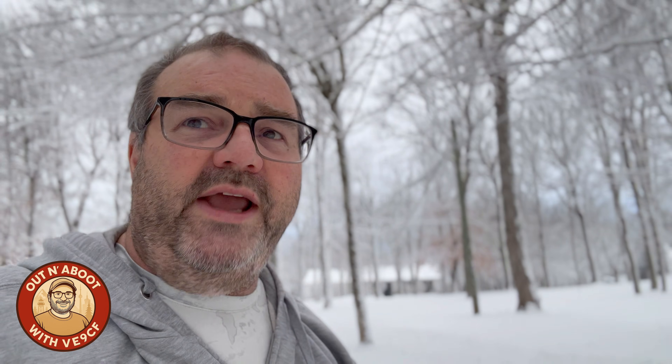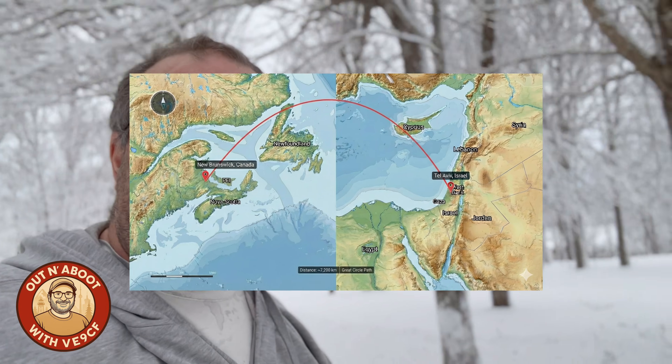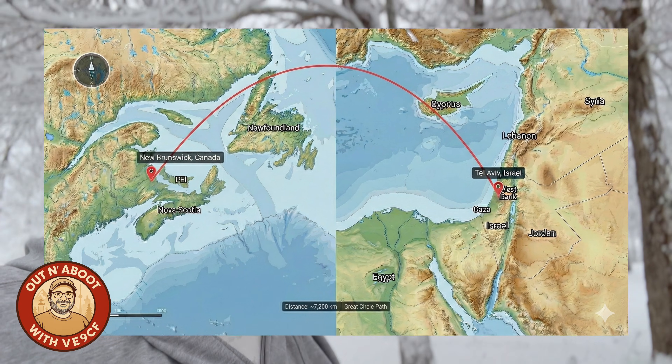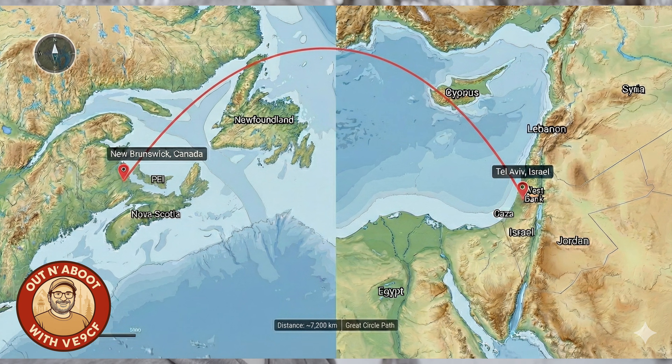For me to work Israel, for example, I aim my beam at 45 degrees. So technically the signal to Israel goes over northern UK from here — that's the shortest path. Because remember, the world is a sphere, and what may look like due east on a flat map is actually not correct. So the short path to Israel is 45 degrees from here.